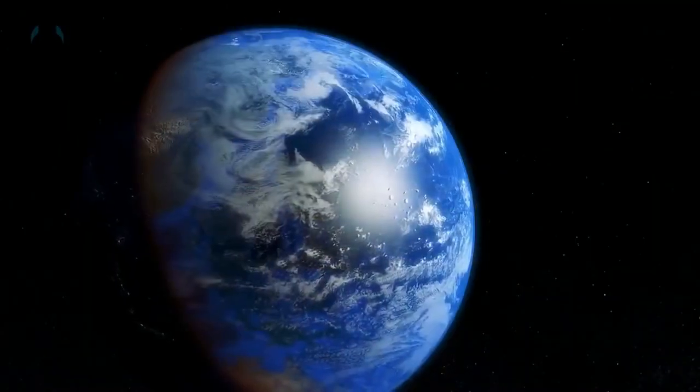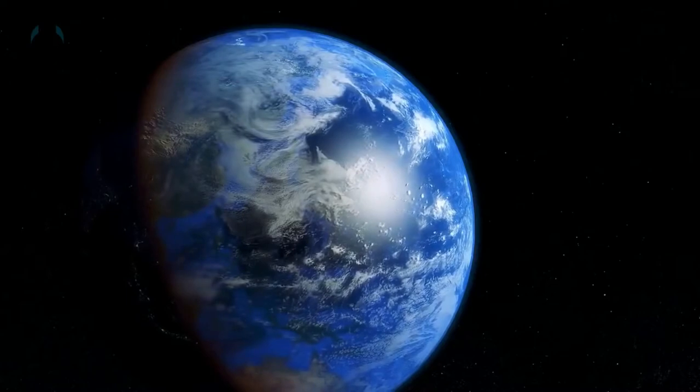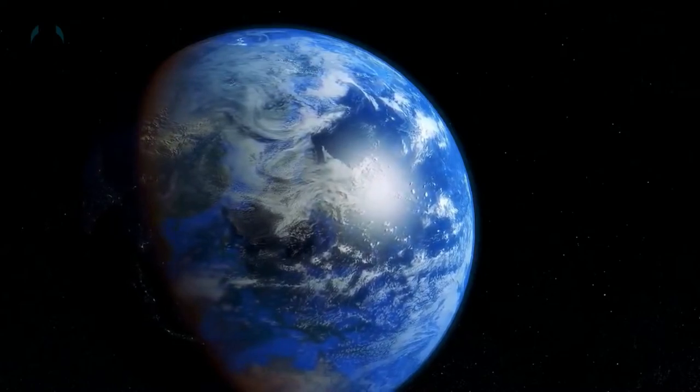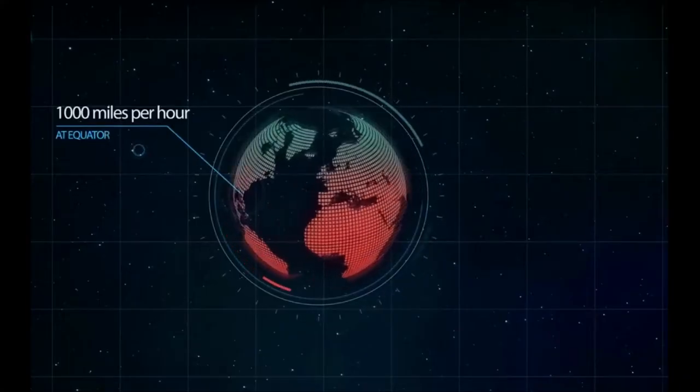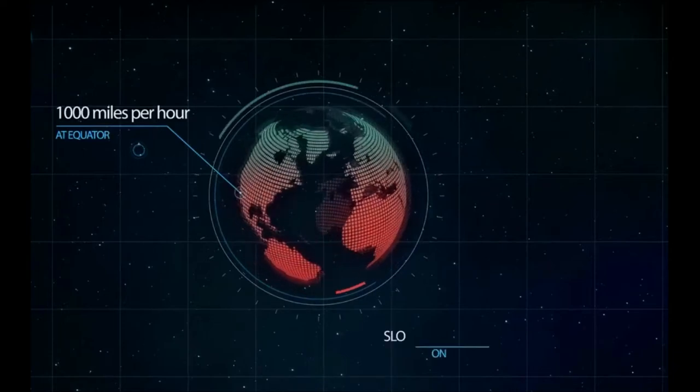But let's just assume for a moment that the Earth did suddenly stop rotating, and take a look at what would happen to us. Our planet spins at its equator 1,000 miles per hour as it orbits the Sun.